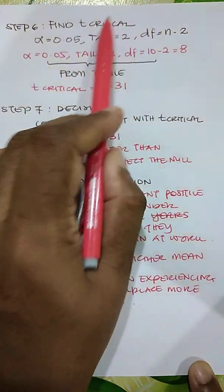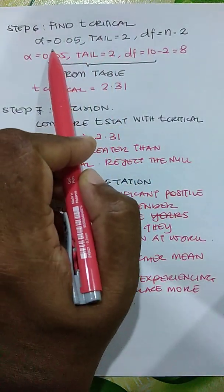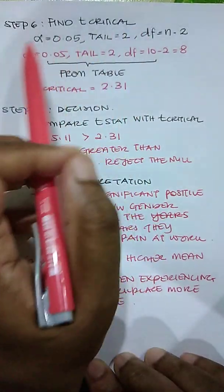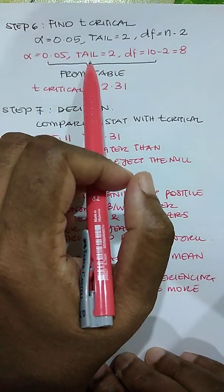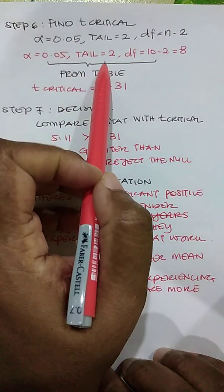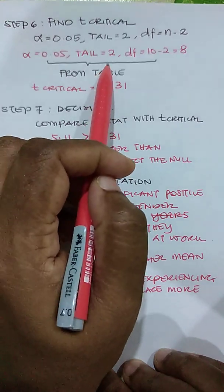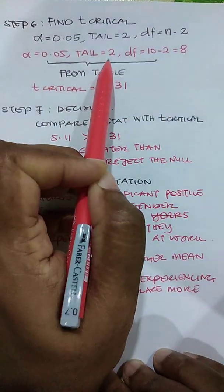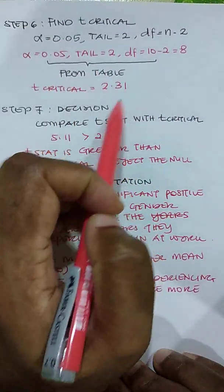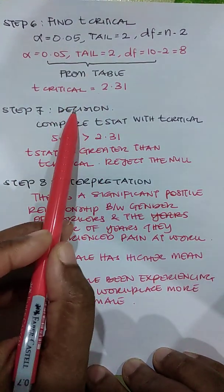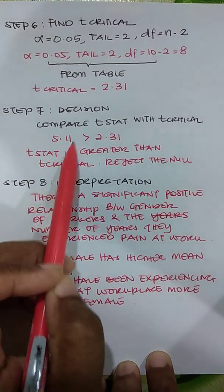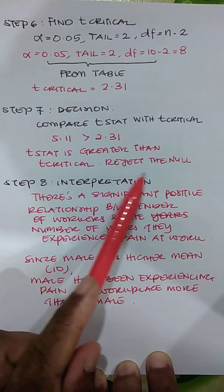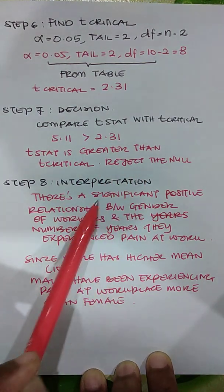The sixth step is to find the t-critical value. You need three pieces of information: the alpha value, the tail, and the degrees of freedom. We use alpha 0.05, a two-tailed test since the null hypothesis states there is no significant relationship, and degrees of freedom equals n minus 2, which is 10 minus 2 equals 8. Using these values, t-critical is 2.31. Since our t-statistic of 5.11 is greater than 2.31, we reject the null hypothesis.